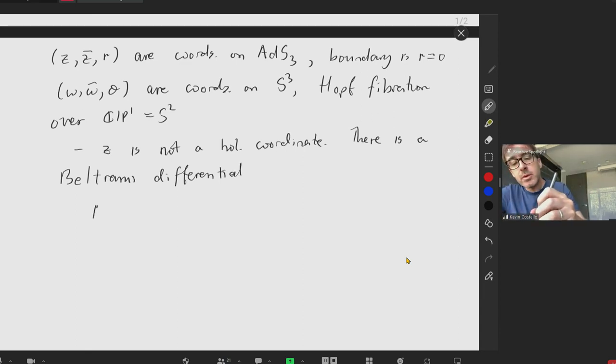Well, Z is not a holomorphic coordinate. There is a Beltrami differential which looks like mu is d-bar of N, we're going to drop some factors of pi, over N squared.